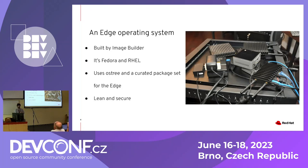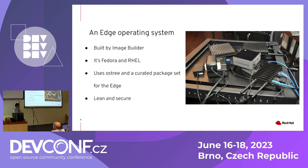RHEL for Edge is built using Image Builder — it can be Fedora or RHEL. The entire system is based on OSTree and RPM-OSTree, and it runs on tiny devices like the Fitlet 2 and the Intel NUC. It's made of a curated package set — things we only need at the Edge, or things we don't need that we remove. It's lean and secure. You don't want a huge attack surface, and you want the system to run with minimal RAM and CPU.